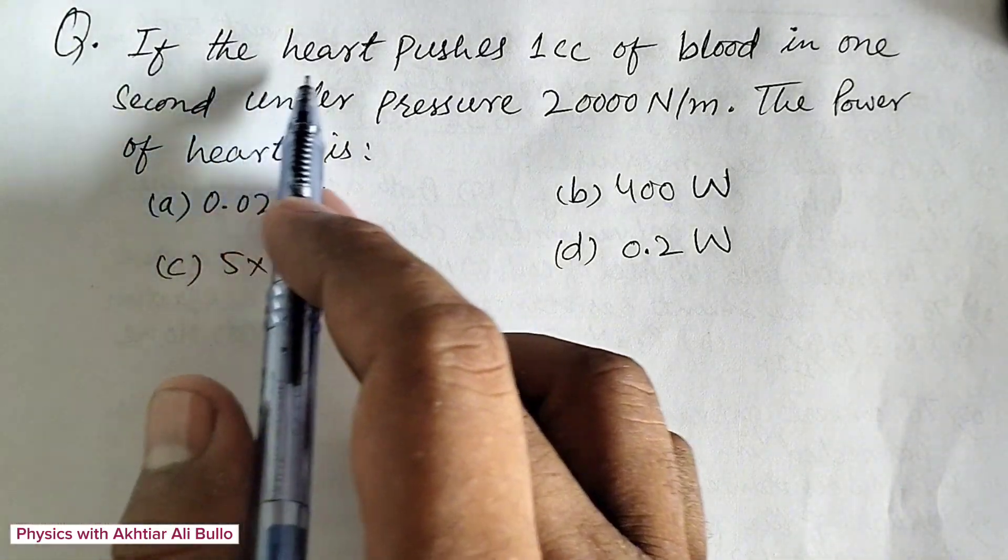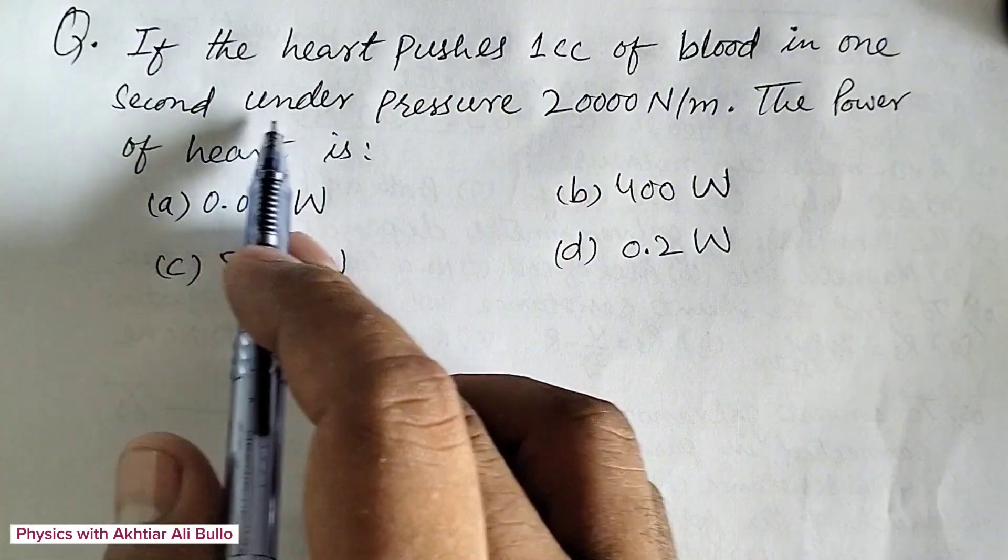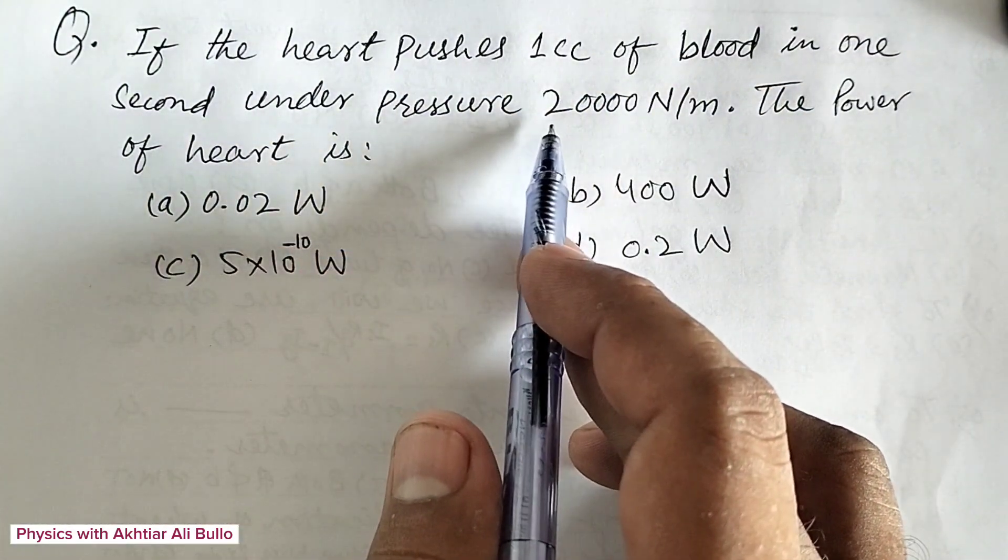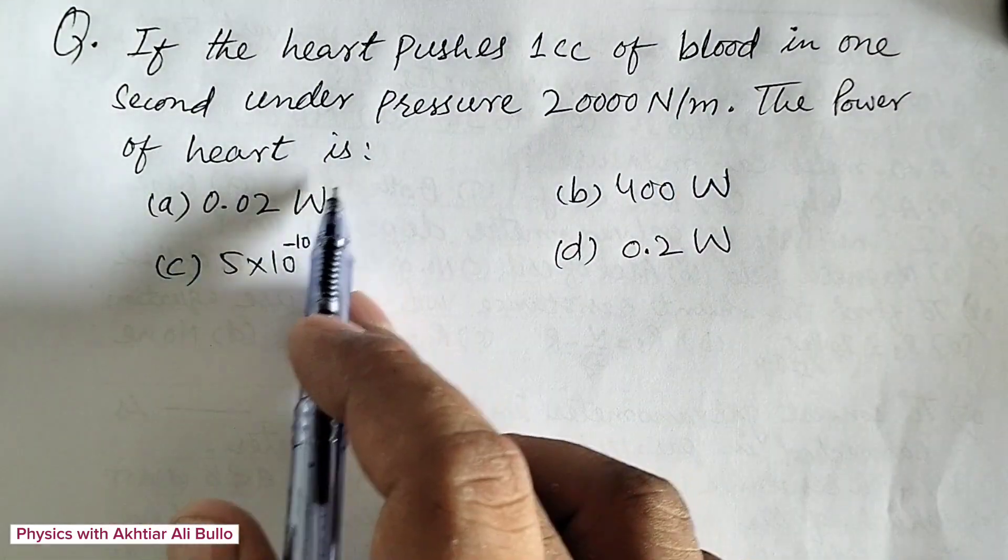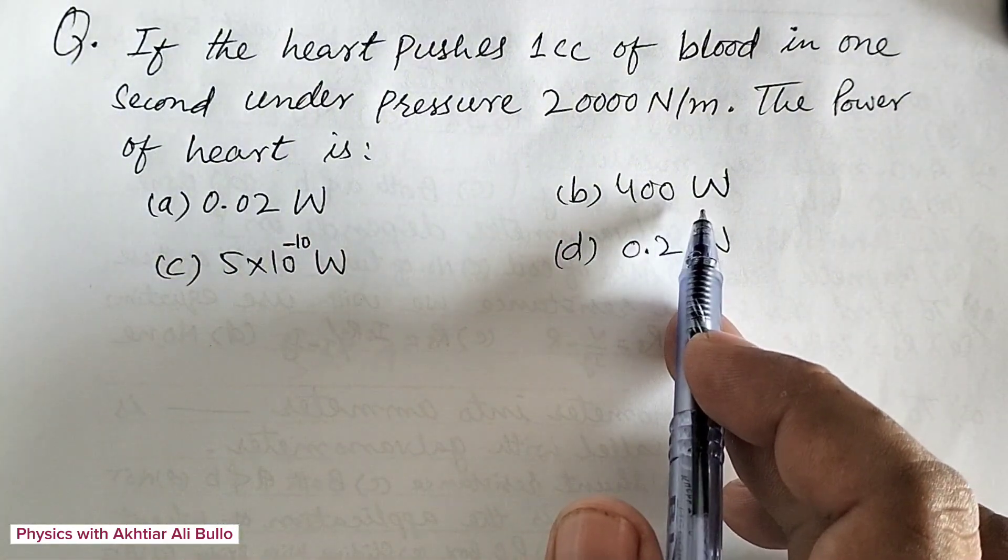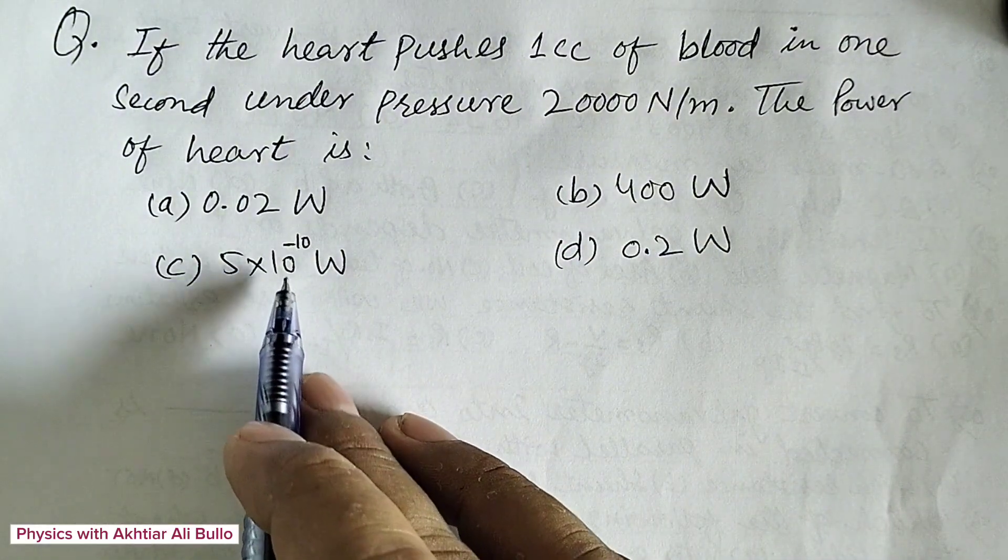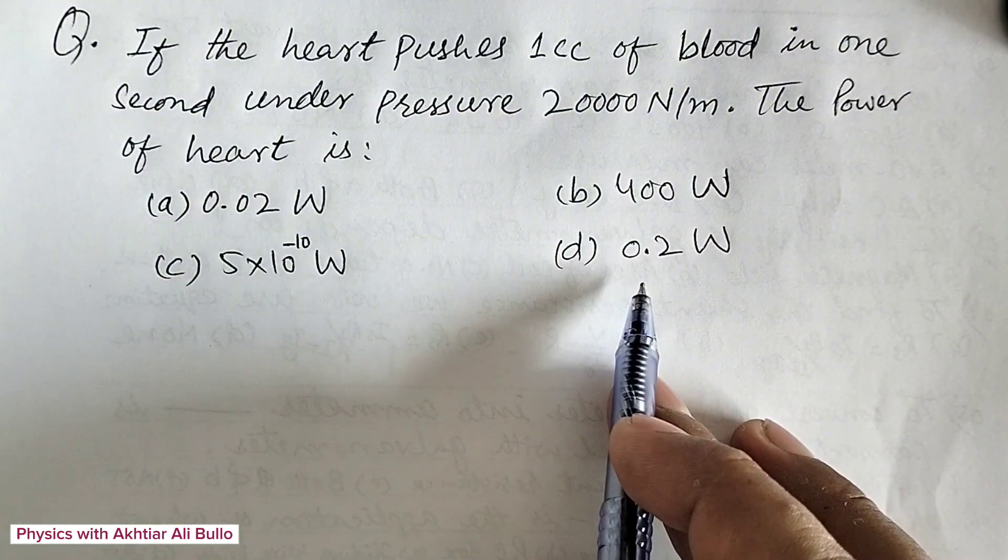The question is, if the heart pushes 1 cc of blood in 1 second under pressure 20,000 Newton per meter squared, the power of the heart is: A, 0.02 Watt, B, 400 Watt, C, 5×10^-10 Watt, D, 0.2 Watt.